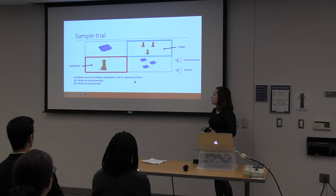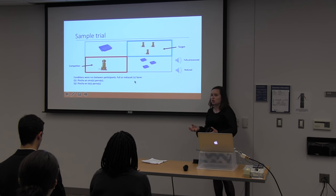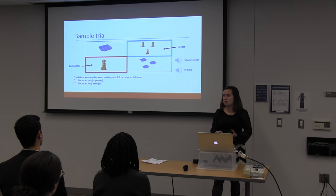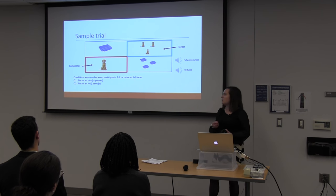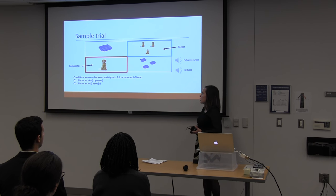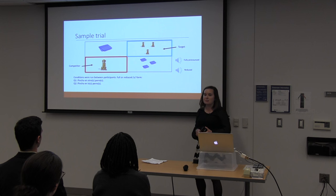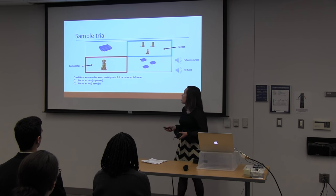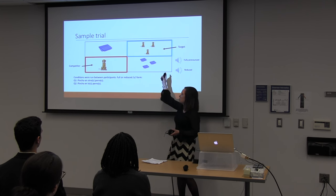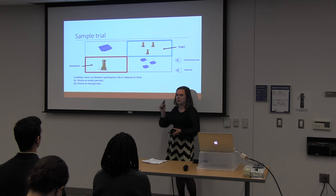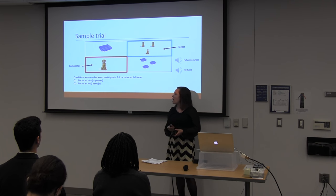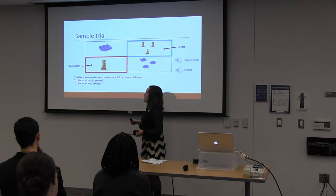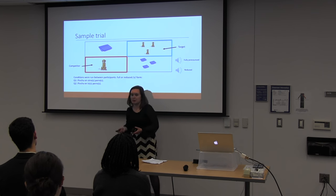In the reduced S condition, if participants were able to use the cue of S to plurality, we would expect them to still look at the target — the plural picture of the dogs. However, if they weren't able to use this cue, it's possible that they would be looking at the competitor instead.